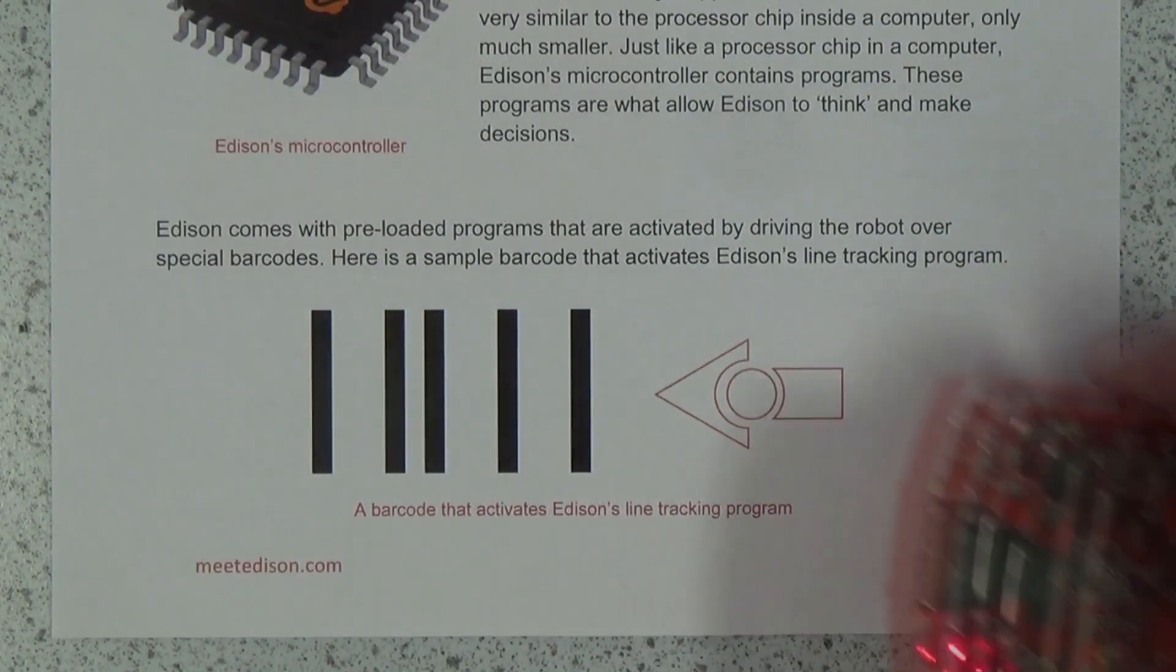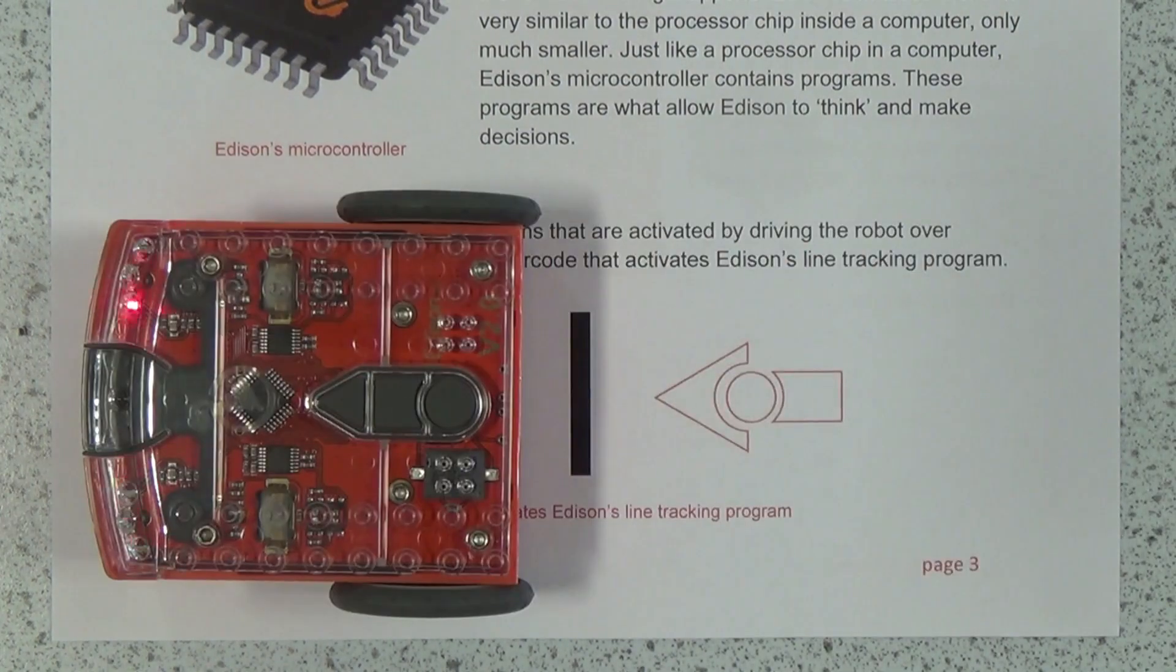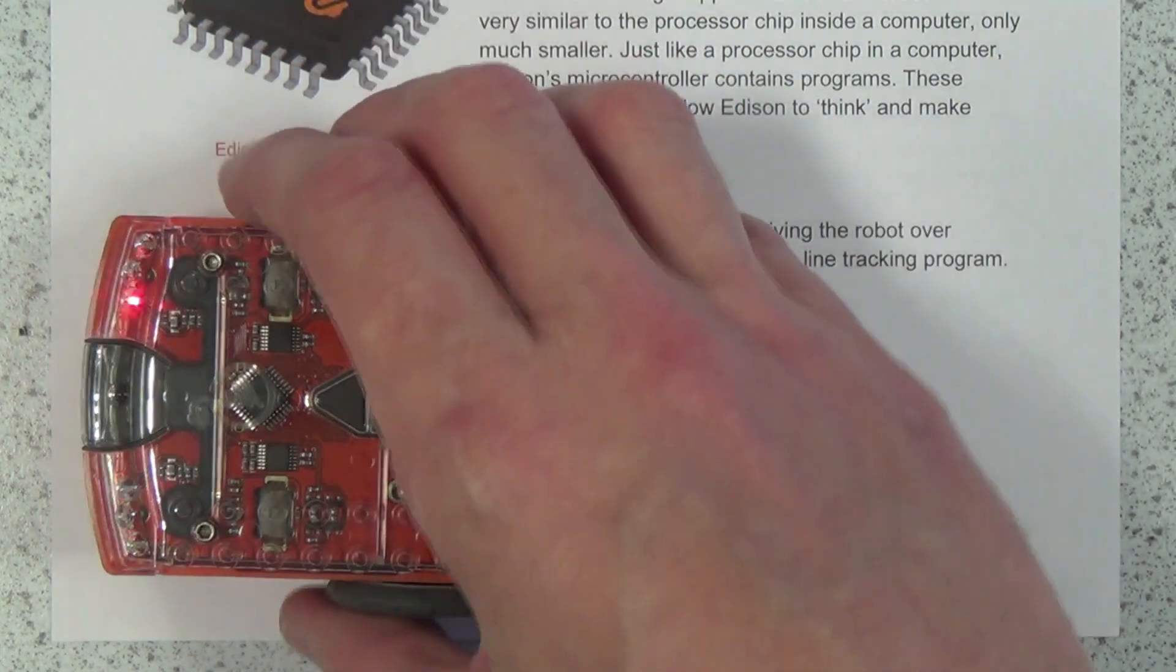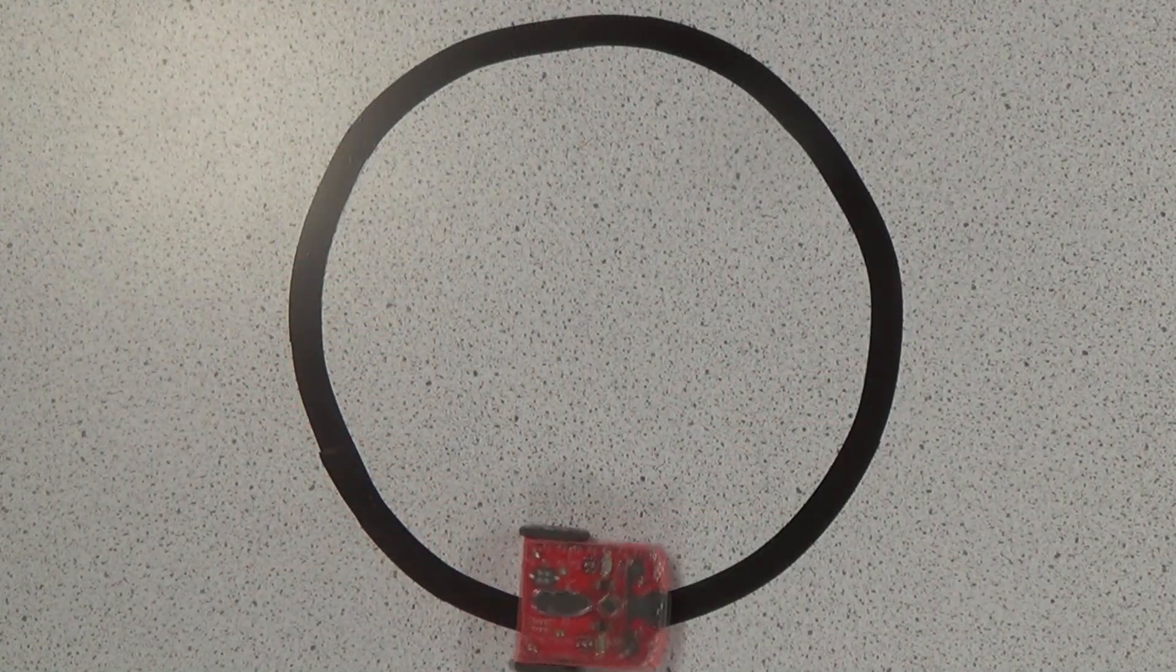All this from just pressing the record button three times and having Edison scan a barcode. That's why Microbrick tell us that Edison can be used, with adult supervision, by children as young as four years old.